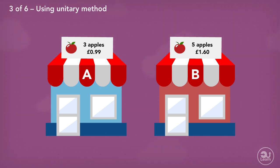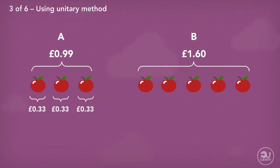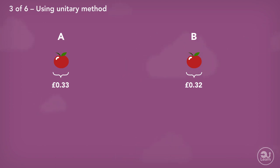Essentially, what's being asked is which has a higher proportion of fruit? Just like the first question, we identify how much one apple costs for each shop, then compare to see where is the cheaper deal. Three apples costs 99 pence from shop A, so one apple must cost 99 pence divided by 3, which equals 33 pence. Five apples costs £1.60 from shop B, so one apple must cost £1.60 divided by 5, which equals 32 pence. Looking at the cost of one apple, we can see that the apples in shop B have a better value for money as each apple is cheaper.